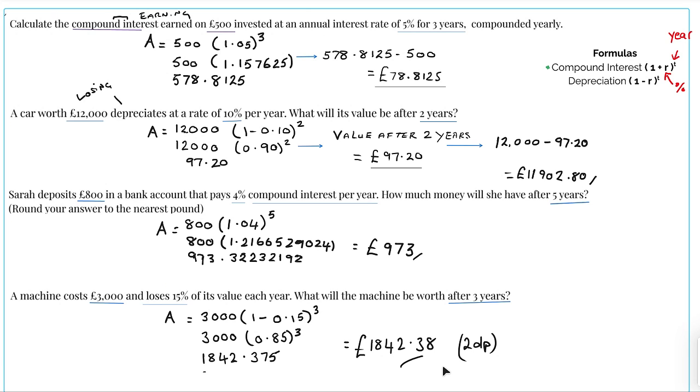I've done them all for us because it would just take too long to write them out with you guys. Compound interest just means you're earning money, depreciation means you're losing money.